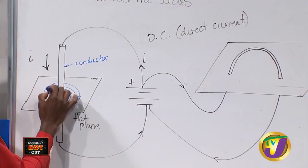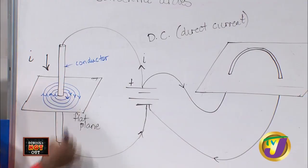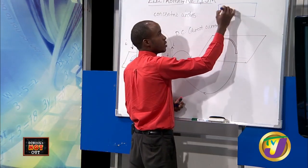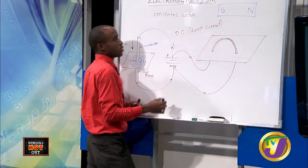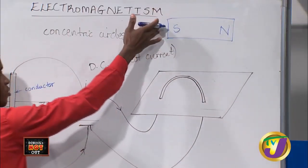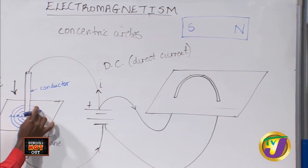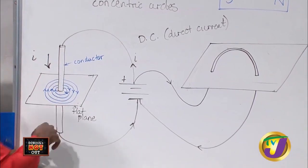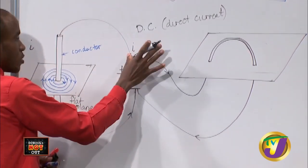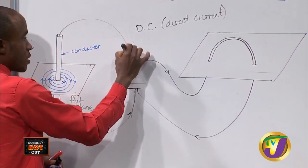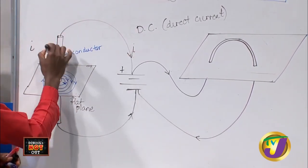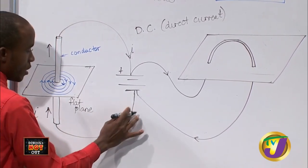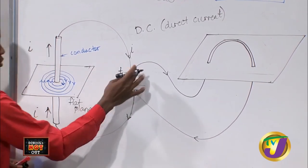This magnetic field is based on north and south. The magnetic field is represented by two poles: a north pole and a south pole. The arrows curling around represent where the north pole would be pointing. What would happen if you reverse the direction of the current? There actually would be a change.